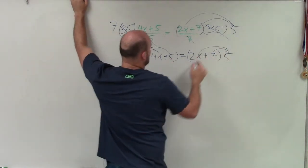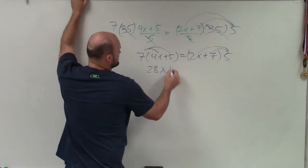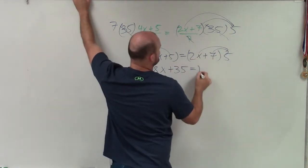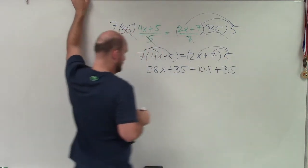So now I just apply distributive property here. 7 times 4x is 28x. 7 times 5 is positive 35 equals 5 times 2x is 10x. 5 times 7 is positive 35.